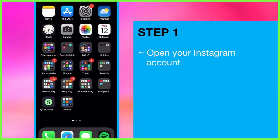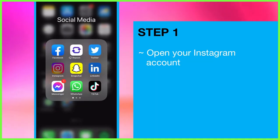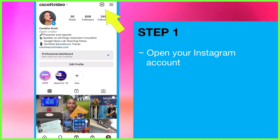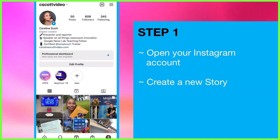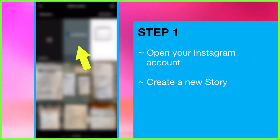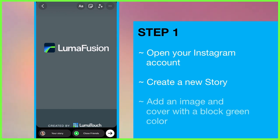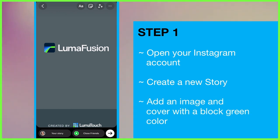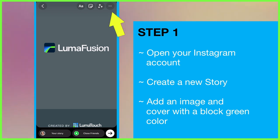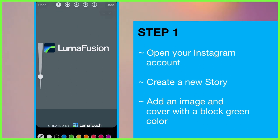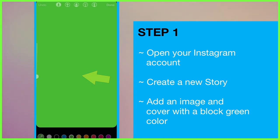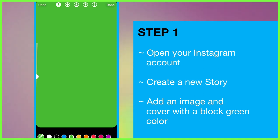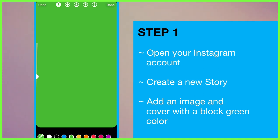Step one: open up Instagram on your device and head to your profile. Look for the plus icon at the top of the screen and once tapped, create a new story. Tap on any random picture in your camera roll — it doesn't matter which — because the next step is to cover it with a block of green which will eventually be keyed out in LumaFusion. Tap on the three dots, then draw, then tap on the colour green before pressing and holding the screen to colour it all in. Now you have a lovely green background to add your chosen GIF to.